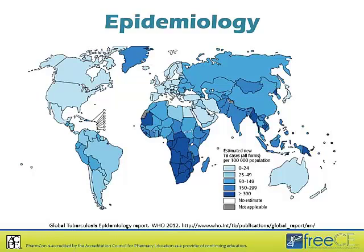Globally, the estimate is that two billion people are infected by mycobacterium tuberculosis. In 2011 it was estimated that there were nine million new cases of TB and 1.4 million deaths from tuberculosis. It does affect a significant proportion of people. It is more of a global illness — we still have incidence in the United States, but it's not quite the same level. India and China together account for 40% of the world's TB cases, and Africa accounts for about 25%, meaning those three locations together account for almost three-quarters of the world's TB cases.